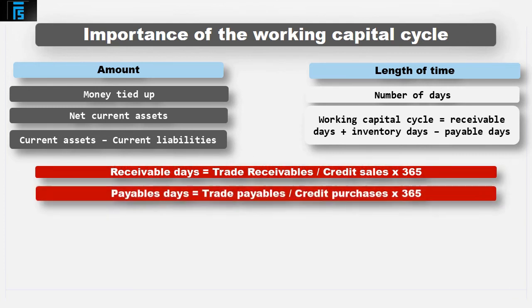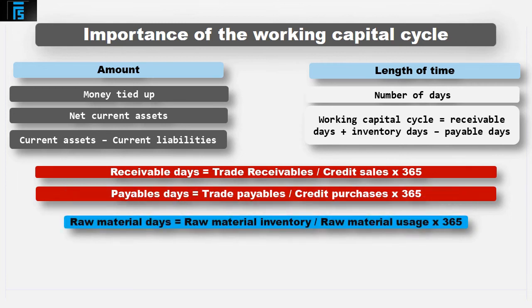On the same basis, payable days equals trade payables, divided by credit purchases, multiplied by 365. Raw material days equals raw material inventory, divided by raw material usage, multiplied by 365.